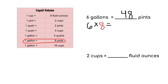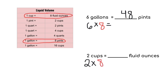Let's try the next one. We have two cups, so we're starting with two, and we're multiplying because we're going from a larger unit of cups to a smaller unit of fluid ounces. We find the correct conversion that has cups and fluid ounces together, so we're multiplying by eight. Our final answer will be 16. Two cups equals 16 fluid ounces.